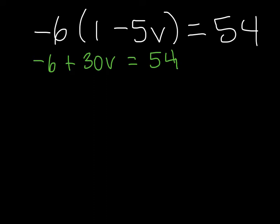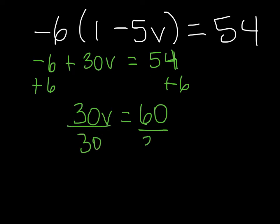We don't have any other distribution or combining of like terms. So now we're going to isolate our variable, or we're going to get our variables on one side and they already are. Now we're going to isolate our variable by adding 6 positives to both sides. So 30v has the same weight as 60 positives. To find the weight of 1v, we have to divide by 30. So v has a value of 2.